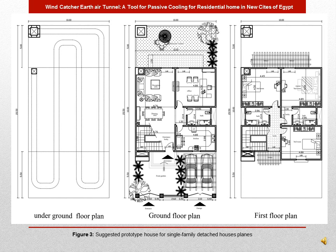The ground floor of the prototype contains a reception area, office, kitchen, bathroom, and stairs leading to the second floor, which contains a master bedroom with a private bathroom and two children's bedrooms with a shared bathroom. The windcatcher is positioned at the corner of the land and channels air down through a tunnel crossing underground beneath the ground floor, acting as a heat exchanger to cool the air before it enters the house. A vertical solar chimney is placed on the south facade.